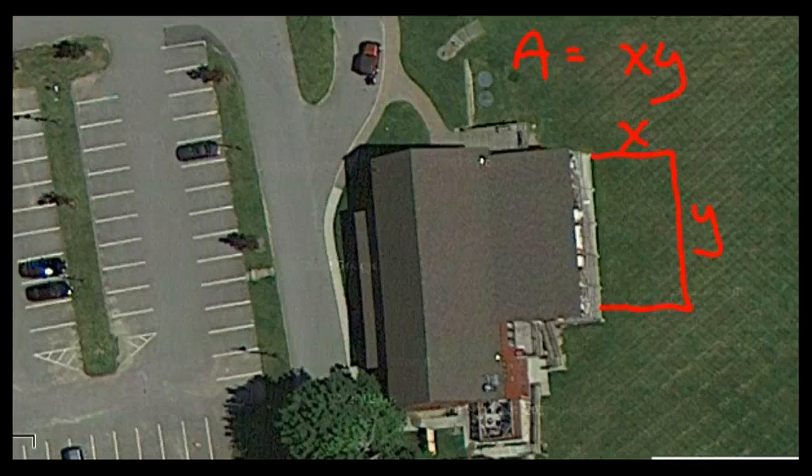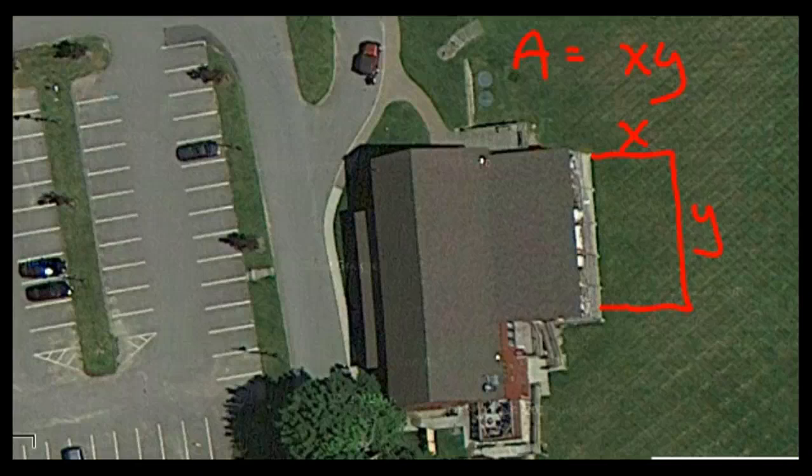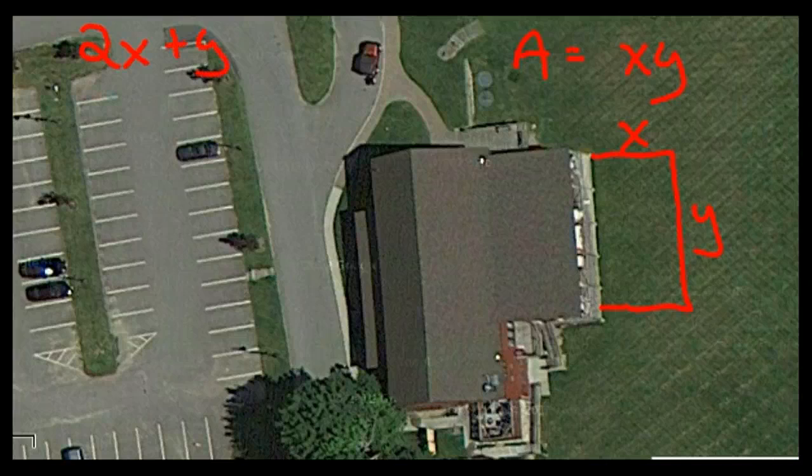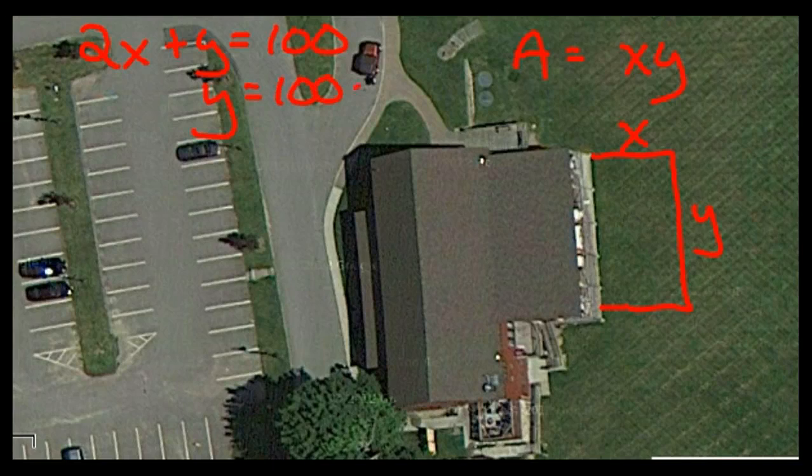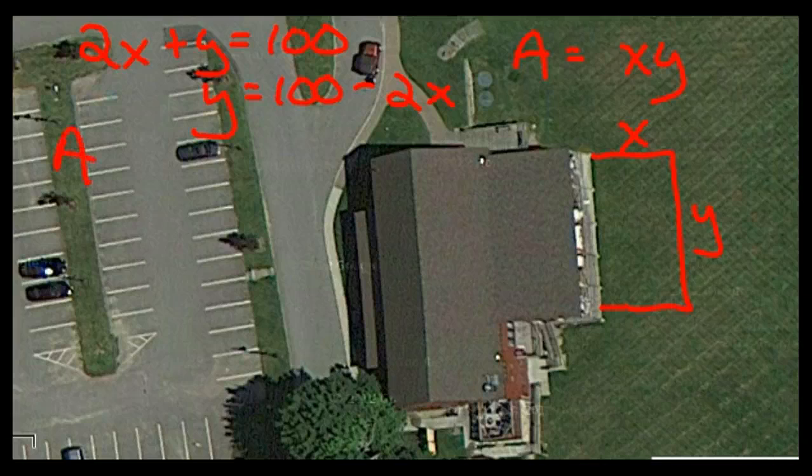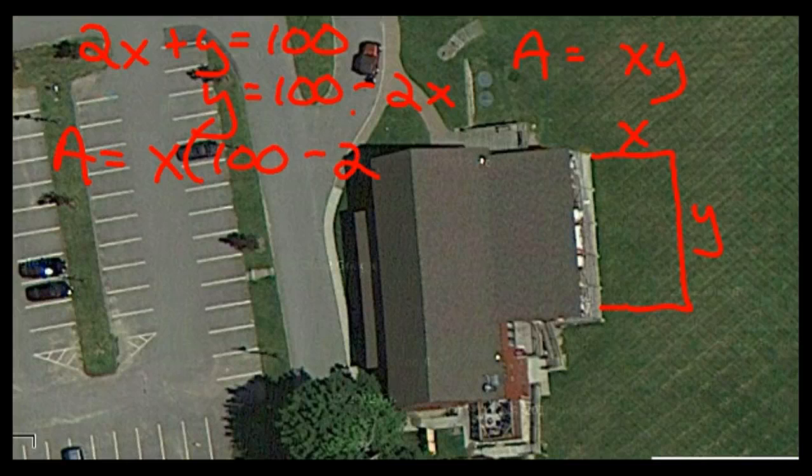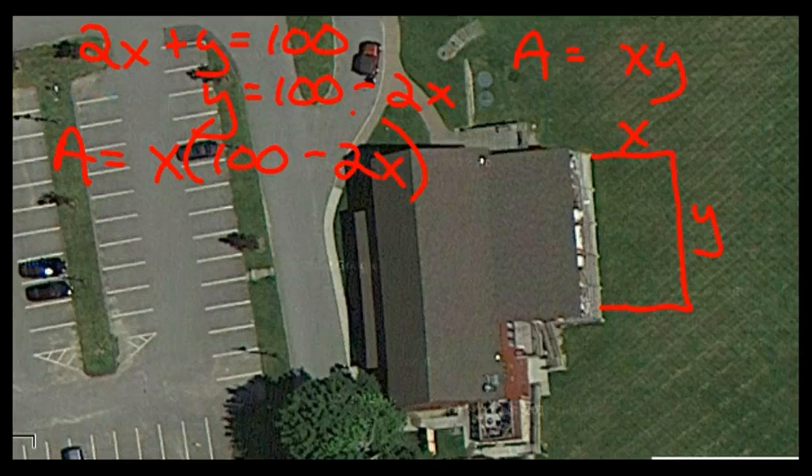We know there's 100 meters of fencing, so that means 2 times x, both sides, plus y has to equal 100. Or in other words, y is equal to 100 minus 2x, and so this area is much better represented by x times 100 minus 2x, and that's the quadratic function that we are going to use.